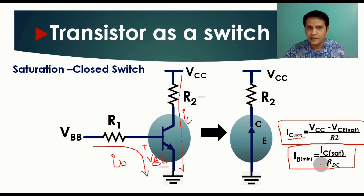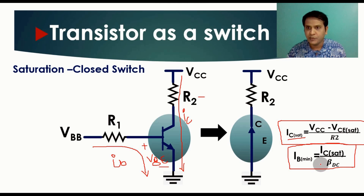To summarize: in cutoff mode, VCE cutoff equals VCC. In saturation mode, IC sat equals (VCC minus VCE sat) divided by R2, and IB min equals IC sat divided by beta DC. This is how a transistor works as a switch — either as an open switch in cutoff mode or a closed switch in saturation mode.